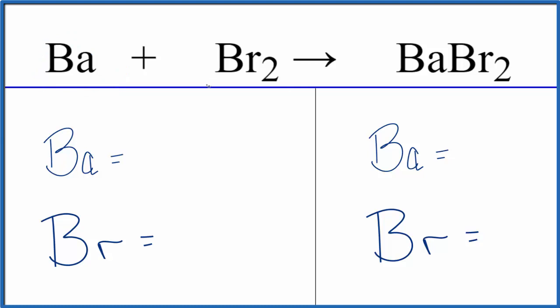So to balance the equation, we need to count the atoms up on each side. The barium, we have one of those and then two bromine atoms. On the product side, we have one barium and then two bromine atoms.